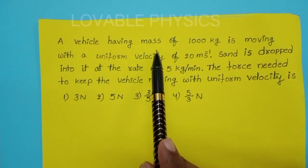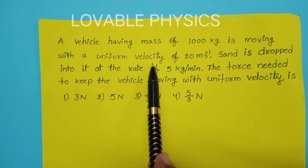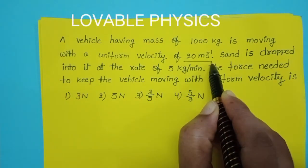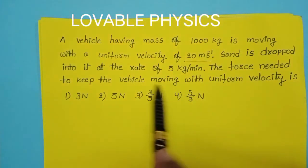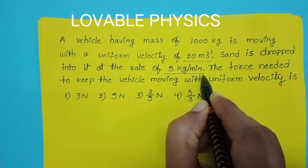A vehicle having mass of 1000 kg is moving with a uniform velocity of 20 meters per second. Sand is dropped into it at the rate of 5 kg per minute.